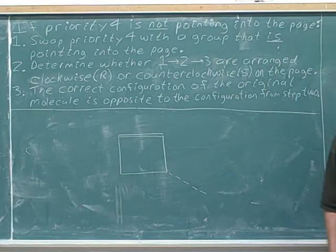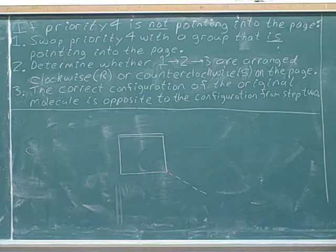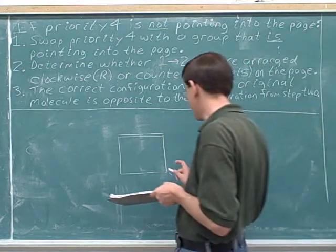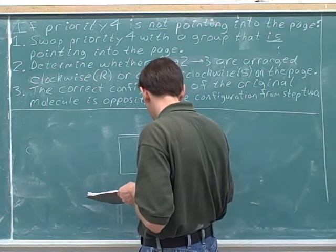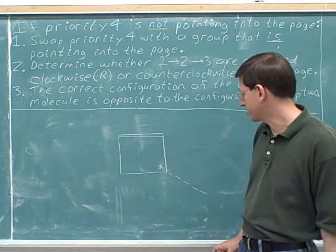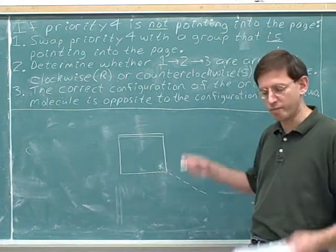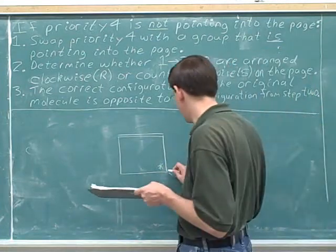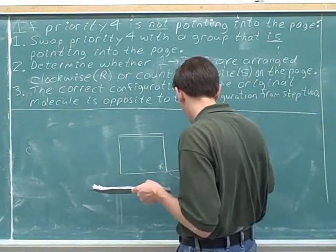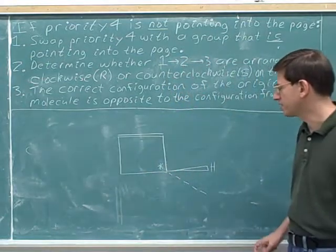Determine the configuration at this stereocenter. Let's put an asterisk in so we can see where the stereocenter is. This is a stereocenter because it's attached to four different groups. There's a methyl group over here and a hidden hydrogen. Go ahead and draw in the hidden hydrogen now because we're going to need that eventually anyway. You always need to draw in the hidden hydrogen if there is one at a stereocenter.